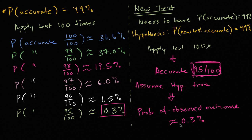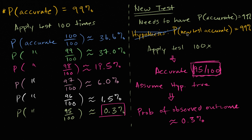As you go deeper into statistics, you'll see there are thresholds people often set — if the probability of something happening is above or below some threshold, we might reject a certain hypothesis. In this case, if my test really was accurate 99% of the time and I apply it to 100 people but it's only accurate 95 out of 100, there's only a 0.3% chance I would have seen that. So it's completely reasonable to reject the hypothesis and conclude I don't feel good about this new cholesterol test.